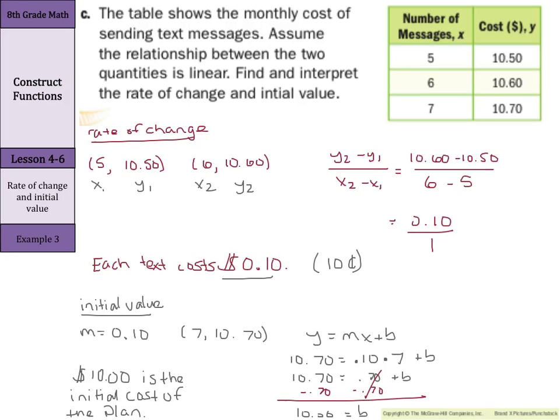So to summarize this example, we need to find and interpret the rate of change and initial value. First find the rate of change. Pick any two points, calculate the rate of change, and interpret. If it's 10 cents going up 10 cents for every one, every one what? It's 10 cents per message. So each text costs 10 cents. Then we can use that slope, 10 cents, and any of the three points we picked, 7 messages and 10 dollars and 70 cents, write in slope intercept form, make your substitutions, and solve for b. And b is our initial value, which in this case was 10 dollars. That is it for this lesson. Good luck!